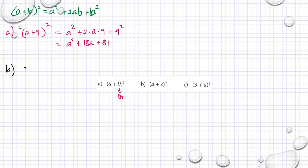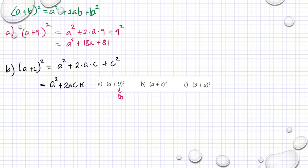Så har vi A plus C upphöjt till 2. Vårt A är A. Så har vi A upphöjt till 2, plus 2 multiplicerat med A, multiplicerat med B som är C, plus C upphöjt till 2. Förenklar vi så: A upphöjt till 2, plus 2AC, plus C upphöjt till 2.